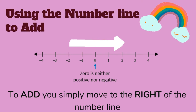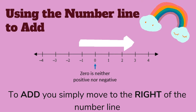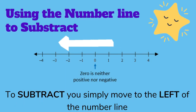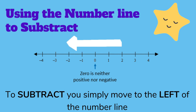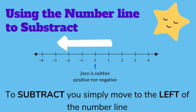Using the number line to add and subtract: to add, you simply move to the right of the number line. To subtract, you simply move to the left of the number line.